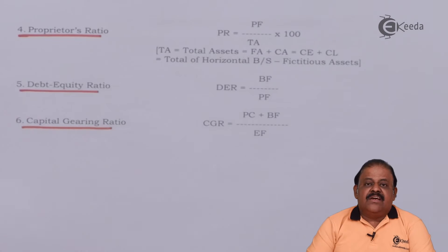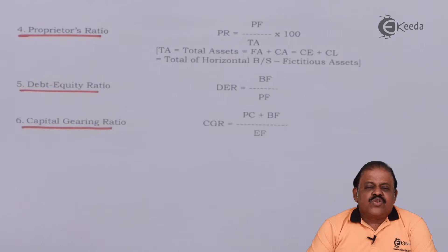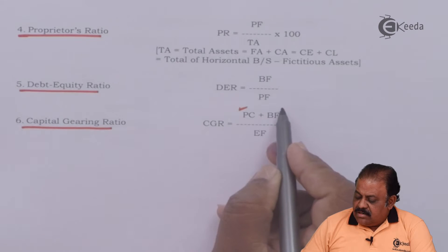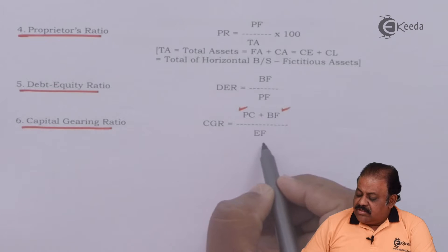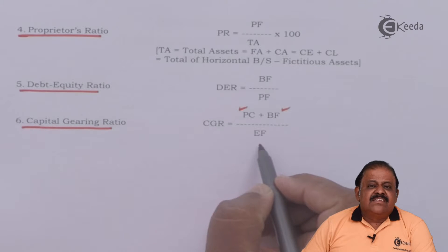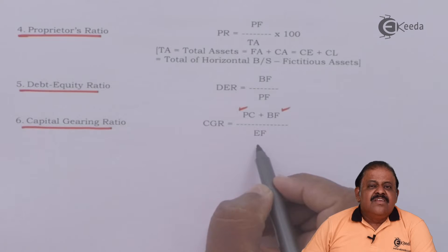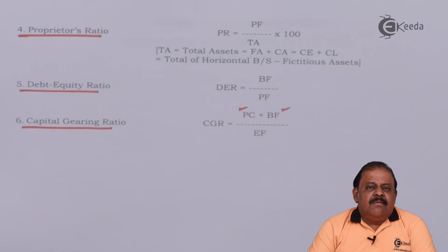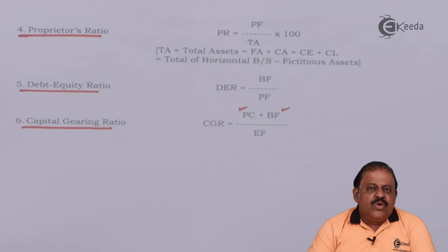The capital gearing ratio shows the capital structure of the company. It is calculated as capital with fixed income — preference capital, debentures, and bank loans — divided by capital with flexible income, which is equity share capital plus reserves minus fictitious assets, that is equity shareholders' fund. Capital gearing ratio shows whether the company is high geared or low geared, meaning whether the company is taking advantage of trading on equity or not.